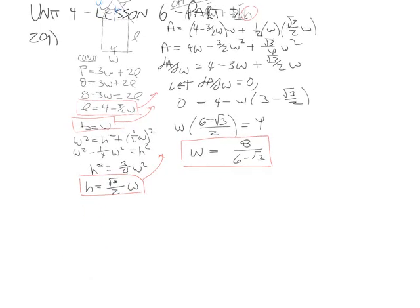It comes down to the fact that we don't like leaving answers with radicals in the denominator. So if we multiply by the conjugate, what happens then is we find width equals 8 bracket 6 plus root 3 on top,